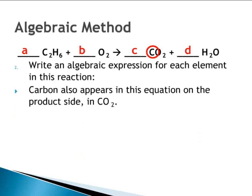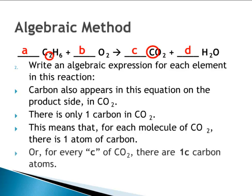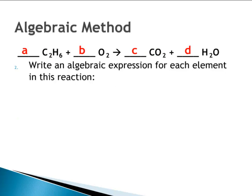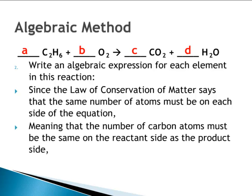Carbon also appears on the product side in carbon dioxide. Notice that there's only one carbon in carbon dioxide, meaning for each molecule of carbon dioxide there is only one atom of carbon — one C carbon atom for every C molecules. Since the law of conservation of matter says the number of carbon atoms must be the same on both sides, we know that 2A equals C.